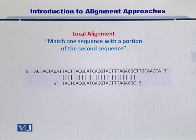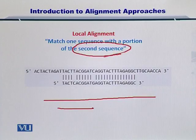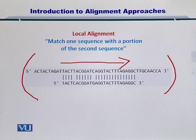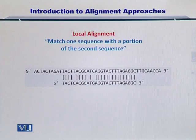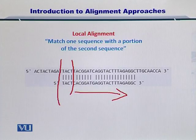Let's start with local alignment. Local alignment essentially focuses on matching one sequence with a portion of the second sequence. I have given you an example here where you have a five prime to three prime DNA sequence on top and another five prime to three prime sequence on the bottom. What has happened is I have slid this sequence along and found out that these four nucleotides are matching exactly — TACT matches with TACT.